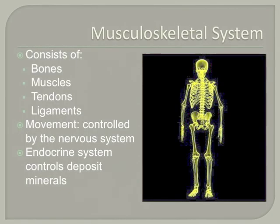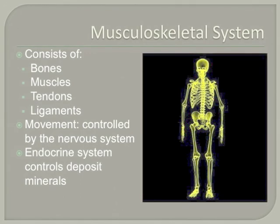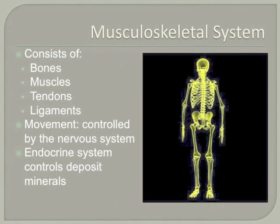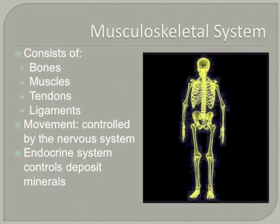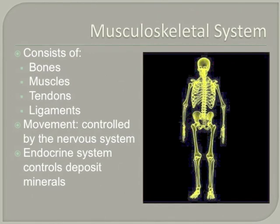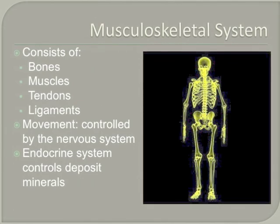The musculoskeletal system consists of bones, muscles, and tendons. The system relies on the nervous system and the endocrine system to function properly. Bones give our bodies a structural framework for tendons to attach to. They also provide support for soft tissue, protect internal organs from injury, and store calcium, magnesium, and potassium.